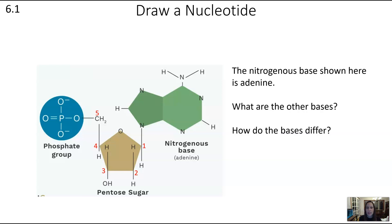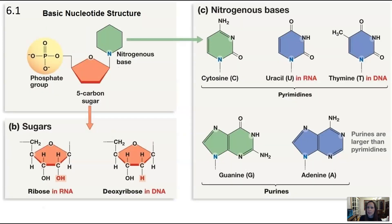In this example nucleotide, the nitrogenous base is adenine. The other nitrogenous bases are cytosine, uracil, thymine, and guanine. One way they differ is in how many rings they have. Cytosine, uracil, and thymine are called pyrimidines and have only one ring, so they're slightly smaller. Guanine and adenine have two rings and are called purines. You should be aware of this single-ring versus double-ring structure.